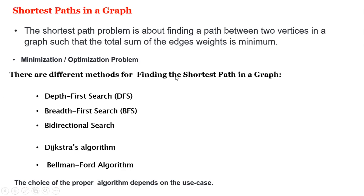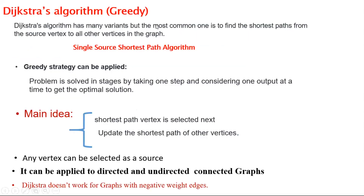There are different methods for finding the shortest path in a graph: depth-first search, breadth-first search, bidirectional search, Dijkstra's algorithm, and Bellman-Ford algorithm. The choice of the proper algorithm depends on the use case. There are different variations of Dijkstra's algorithm, but the most common one is to find the shortest paths from the source vertex to all other vertices in the graph. In this algorithm, a greedy strategy is applied — the problem is solved in stages by taking one step and considering one output at a time to get the optimal solution.